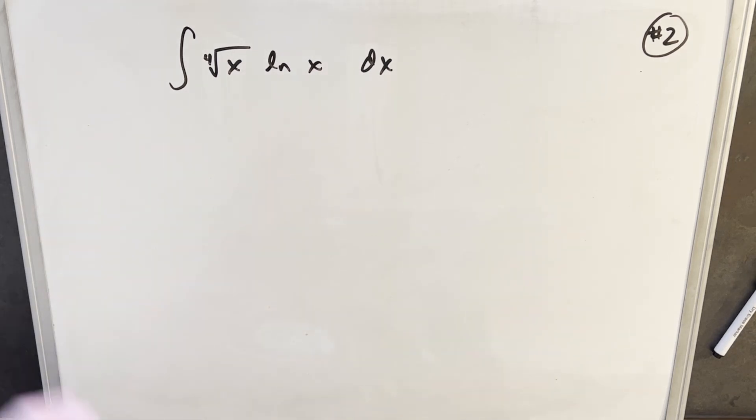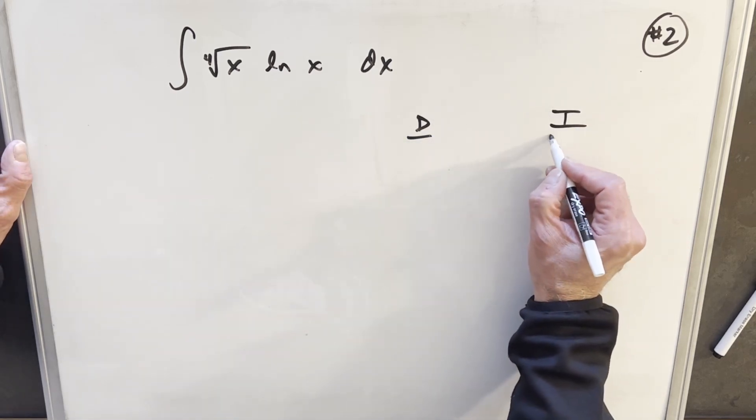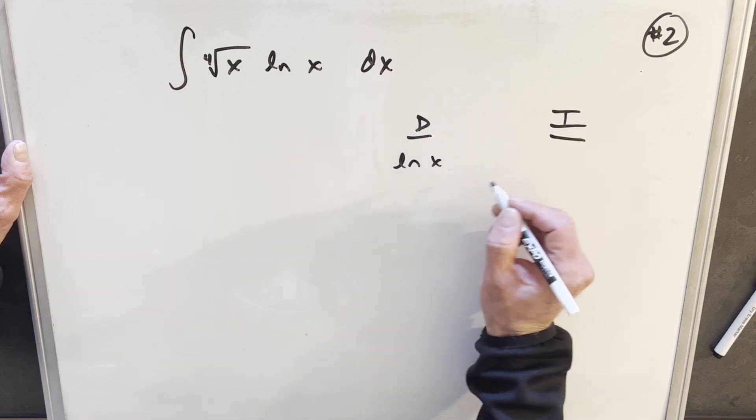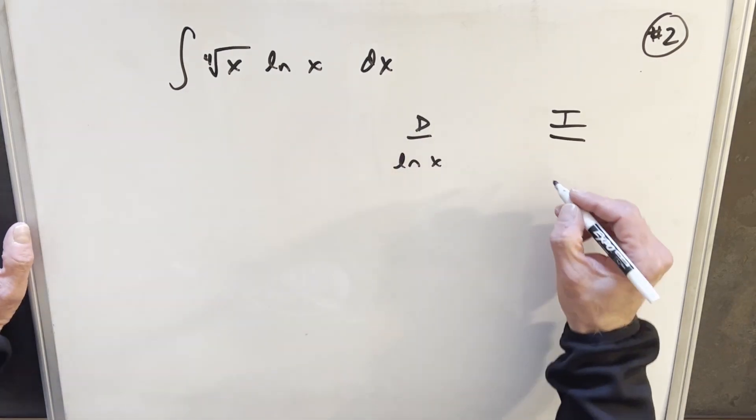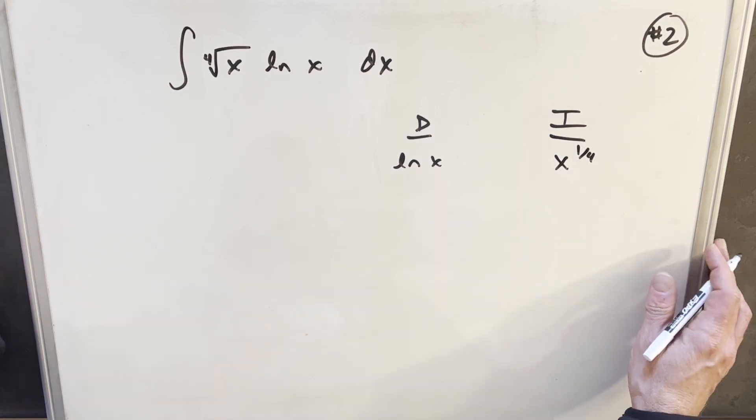So what I'm going to do for this is we'll do the DI method tabular integration. That's going to allow us to differentiate our natural log. So we'll set up the DI table like this, so that we're going to differentiate natural log. Then we'll integrate the fourth root x, but I'm just going to write it as x to the one-fourth. Just makes it a little easier to use the power rule.